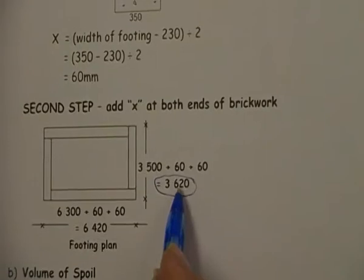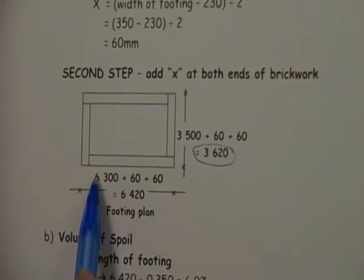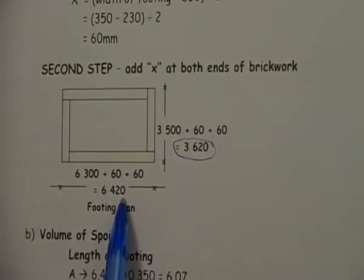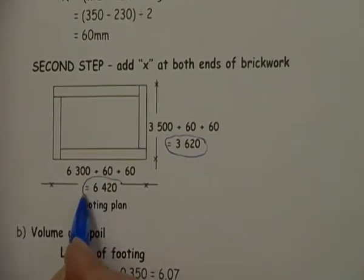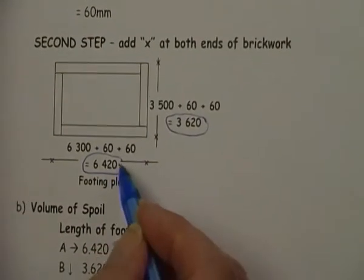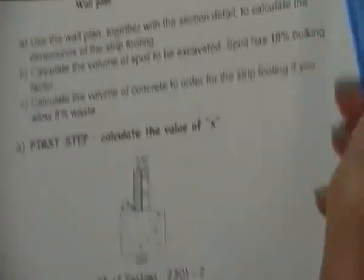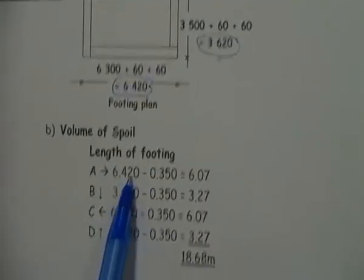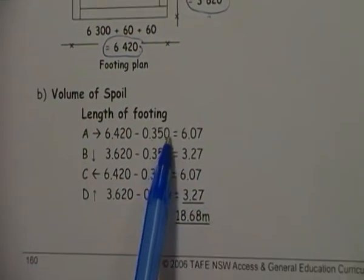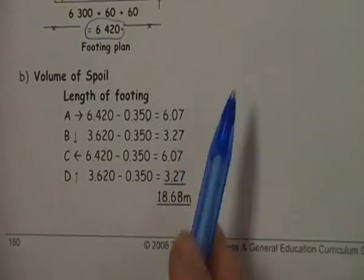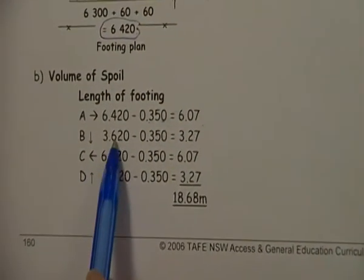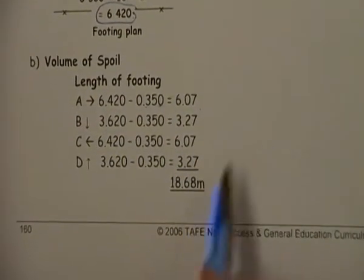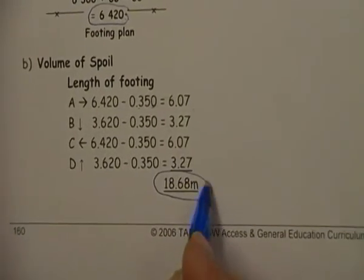My length is 6.3 originally. I'm going to add 60 and 60, so I get a new figure of 6.420. These are my new dimensions that I have to use when I'm calculating my spoil and my concrete. 6.420 minus 350, the width of the footing, like we've always done before, we get our length 3.620 minus 0.35, and we continue down and we get the length of our footing.